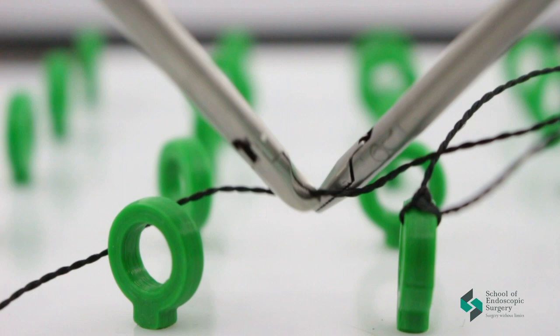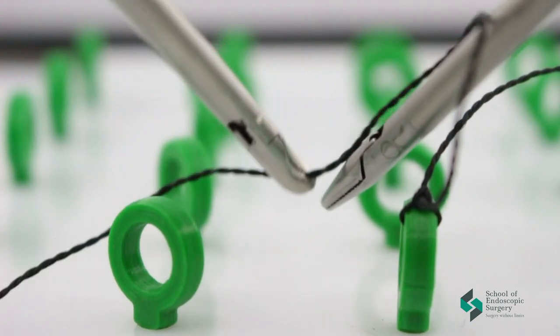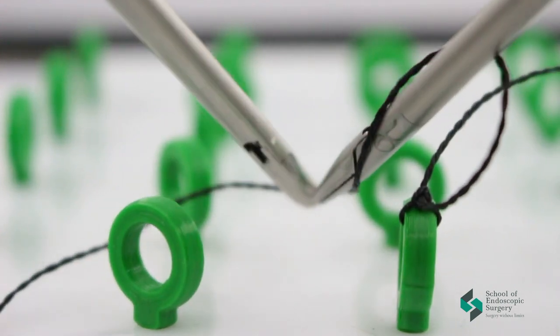The second step is forming a knot with the instrument you use to hold the thread. Try making the knot with the other hand.